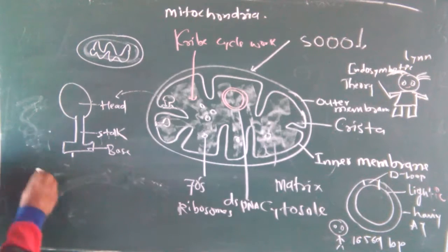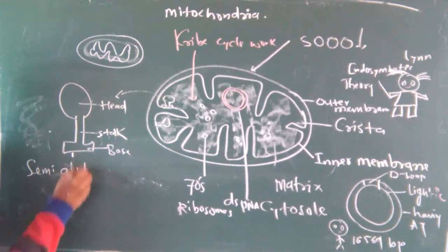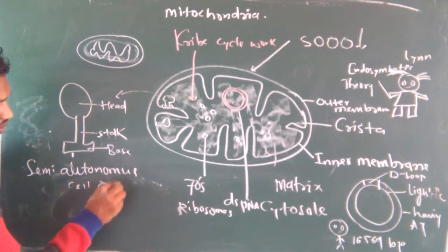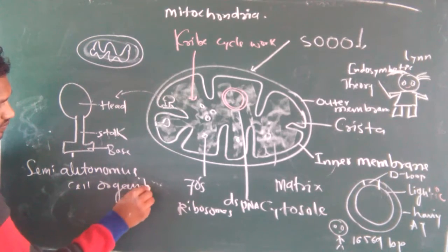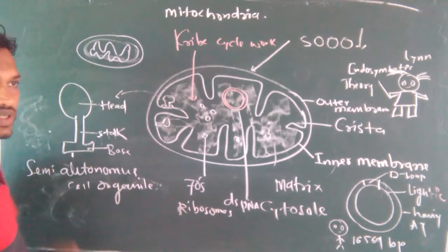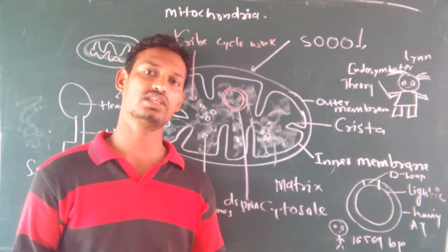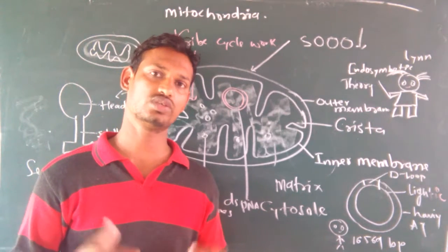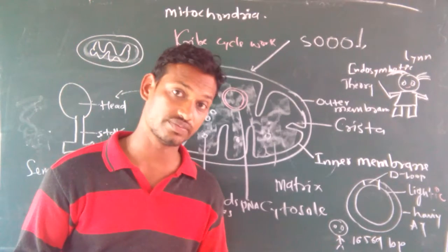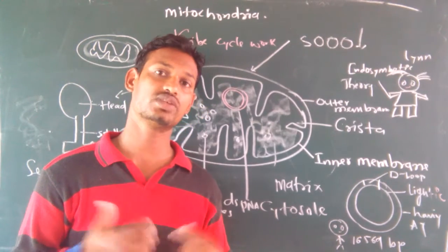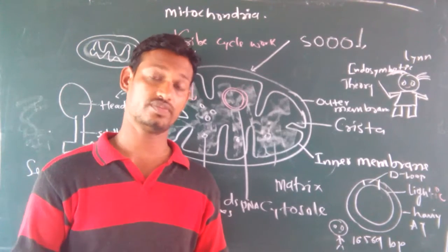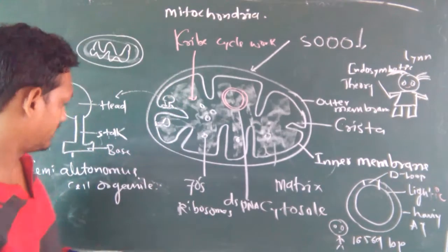This is called a semi-autonomous cell organelle. Why is it called a semi-autonomous cell organelle? Because it has the ability to divide. It has no need to wait for any extra signaling. It has the ability to divide itself. That is why it is called an autonomous organelle.